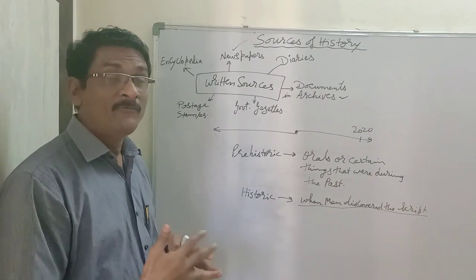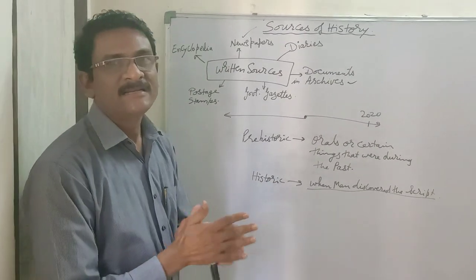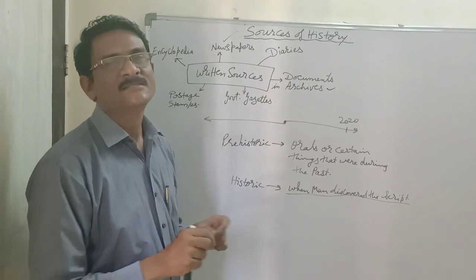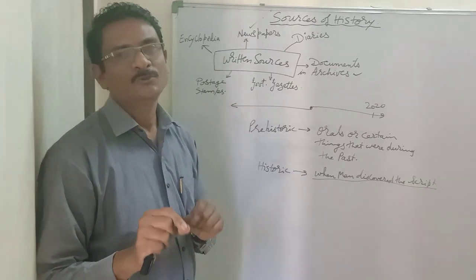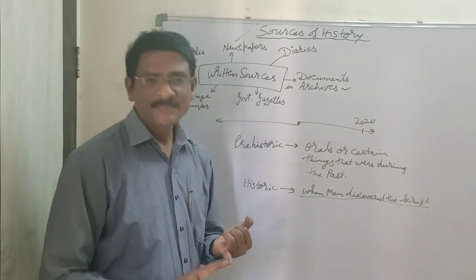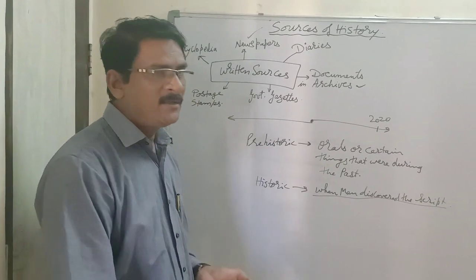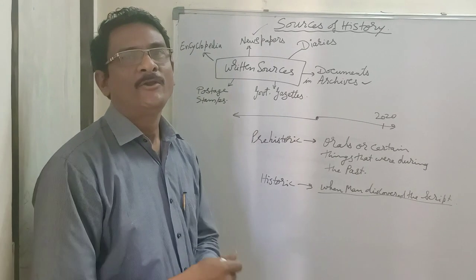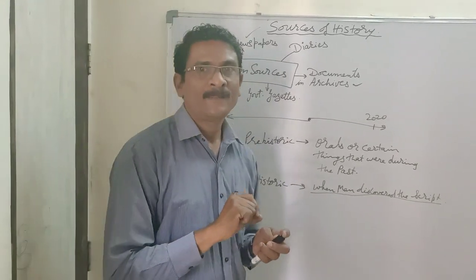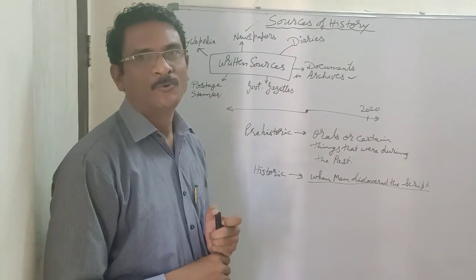Slowly, with the printing press, it entered into various sectors, and then even the Indians started some of the newspapers. We have mentioned some examples — for example, the Kal, the Maratha. Even today, in Akola, we have the HIPPAP, which is one of the newspapers near about 100 years old.